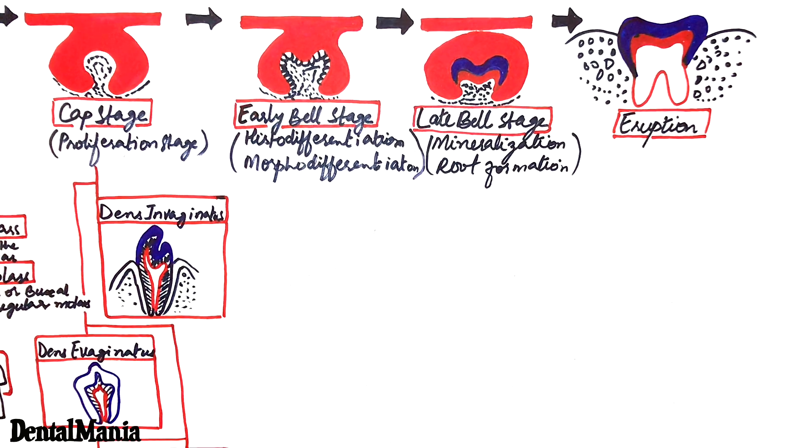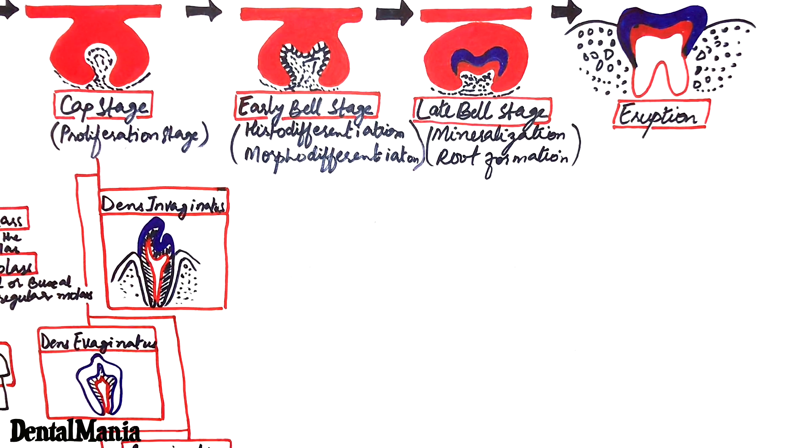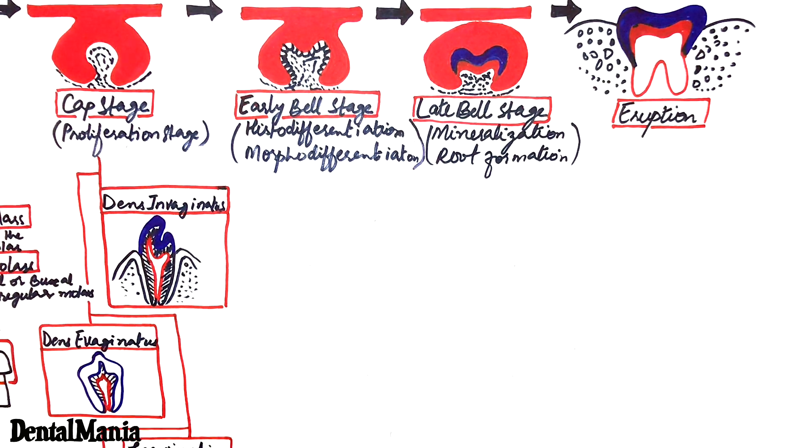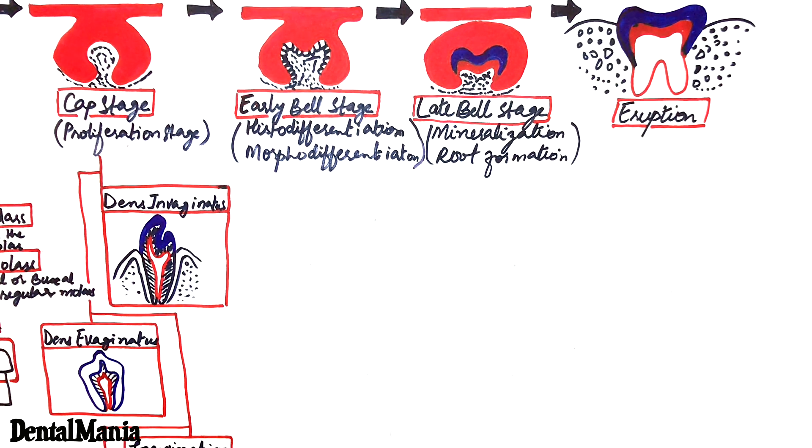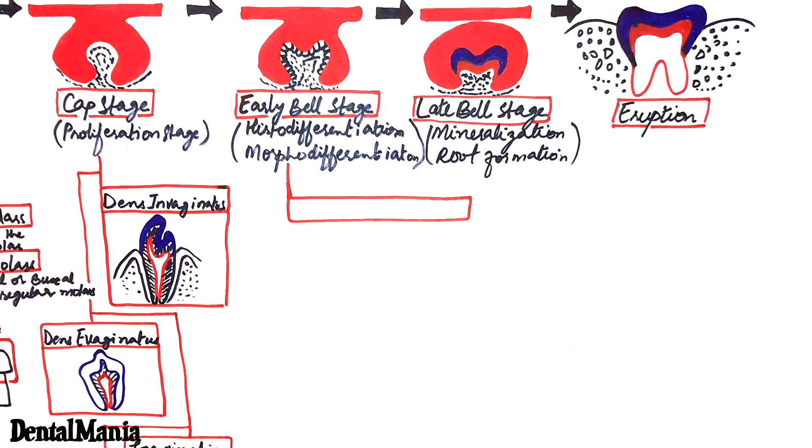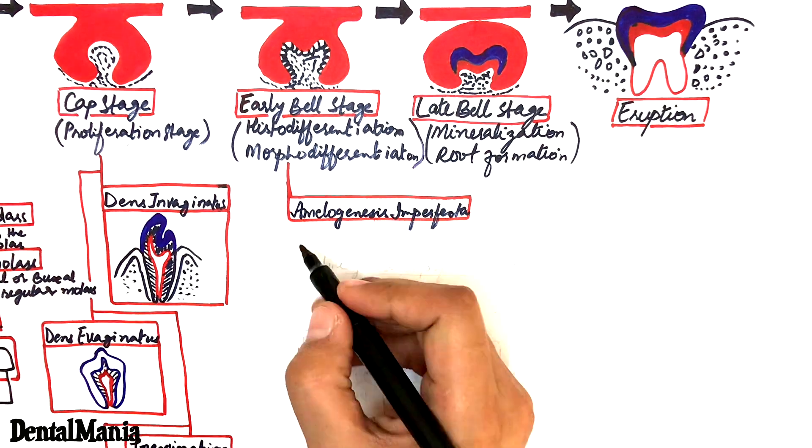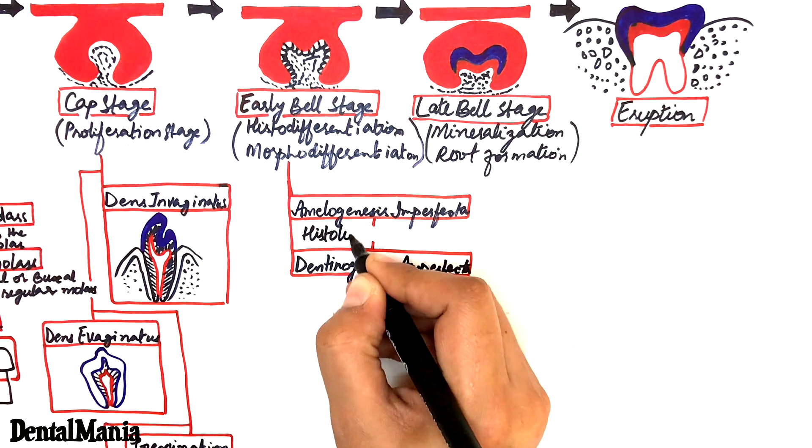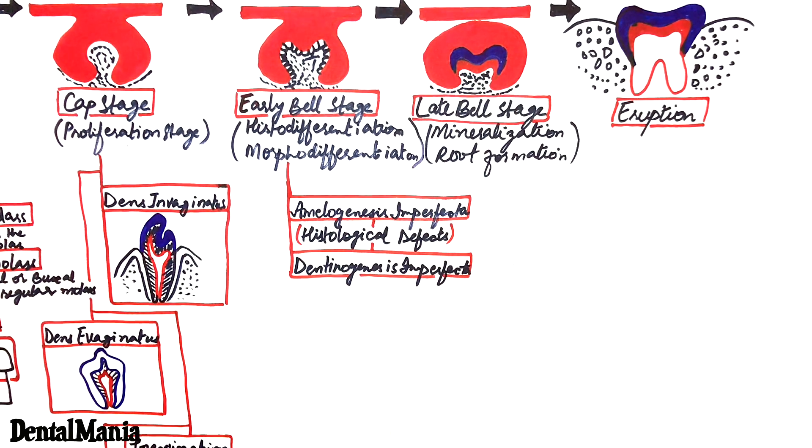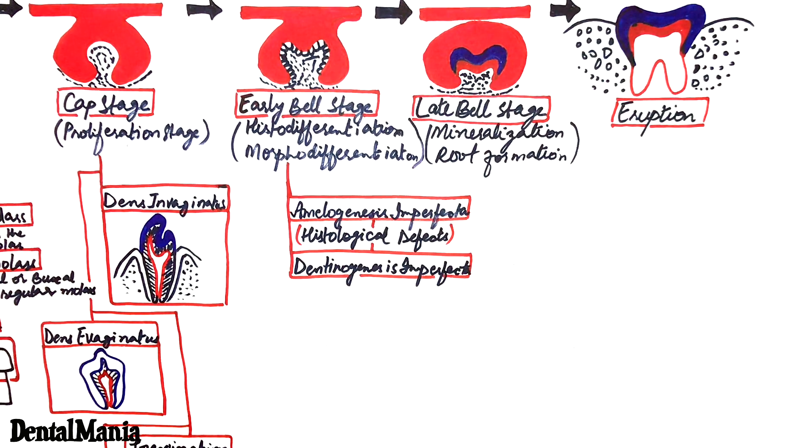Abnormalities occurring at the early bell stage are a result of improper histodifferentiation and morphodifferentiation. As we know that in histodifferentiation, enamel and dentin forming cells called ameloblasts and odontoblasts are differentiated. So defects in their differentiation leads to amelogenesis or dentinogenesis imperfecta. We will have a detailed overview of it in my upcoming videos.